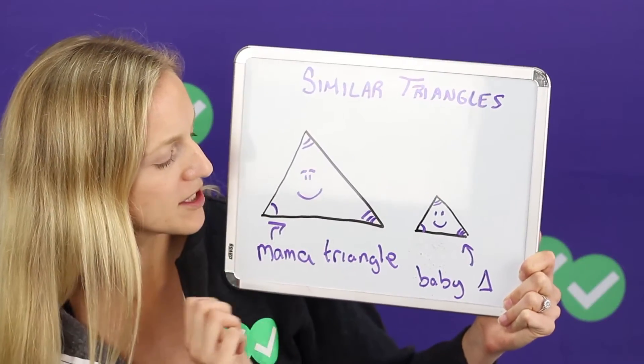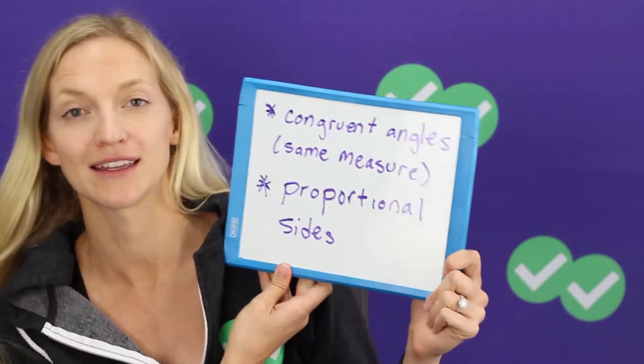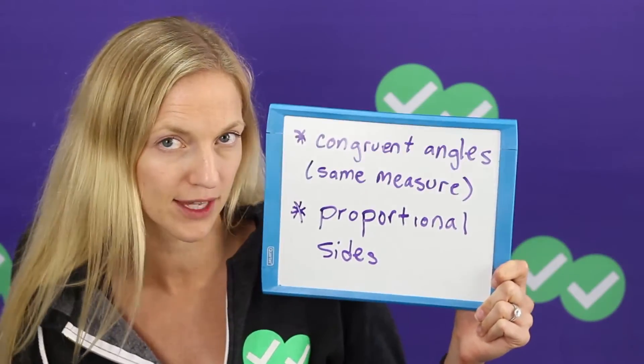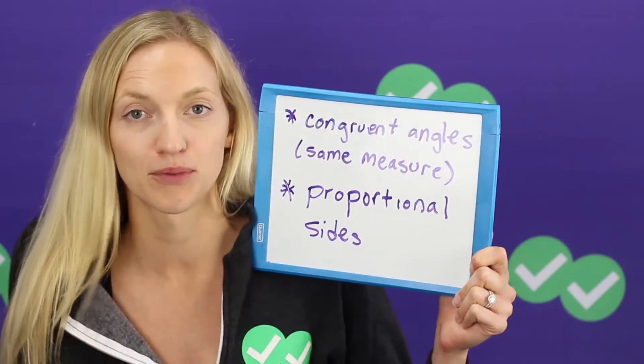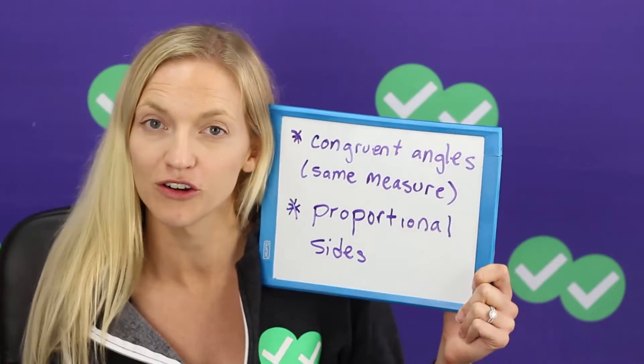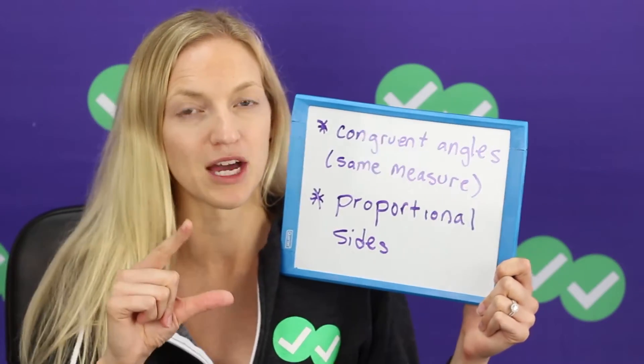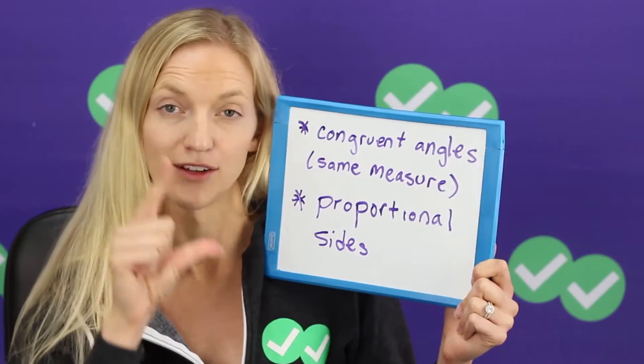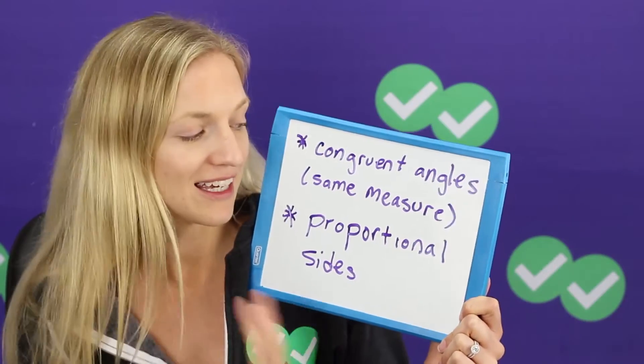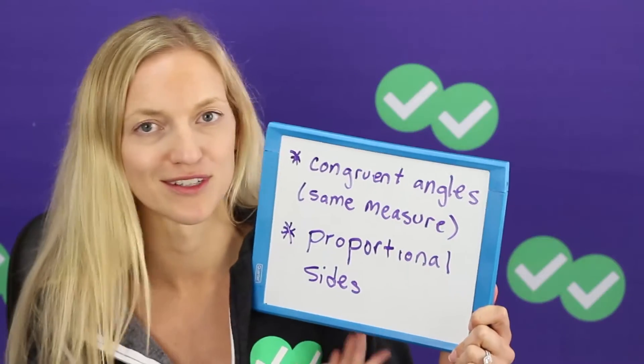So what similar triangles are is they have congruent angles, meaning the angles have the same measure. All their angles are congruent, not just two of them, all three need to be, and proportional sides is what this leads to. So you can imagine if the angles are all congruent, if they're all the same, that angle measure is then dictating what the angle of the sides are and so that's why they end up looking the same. The key here to remember is proportional sides.